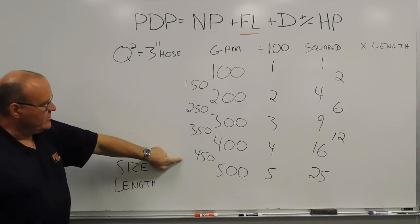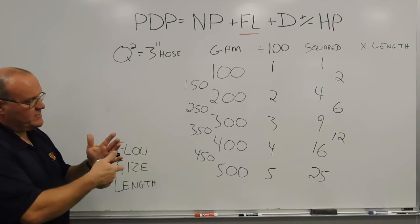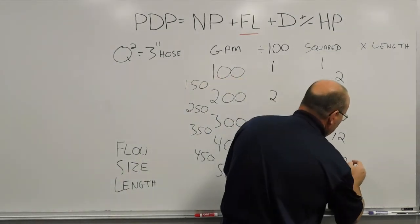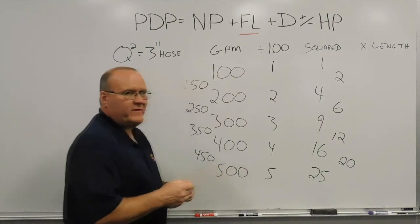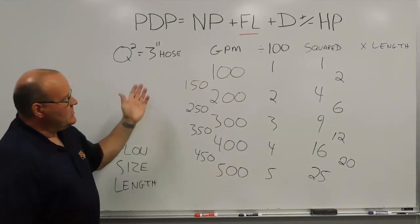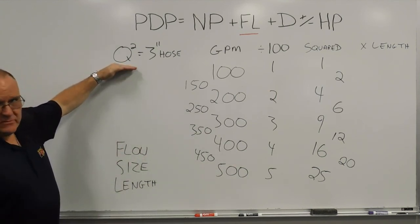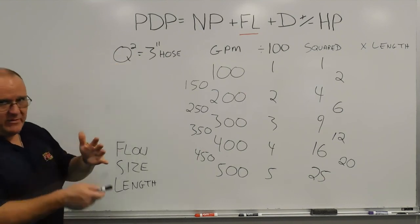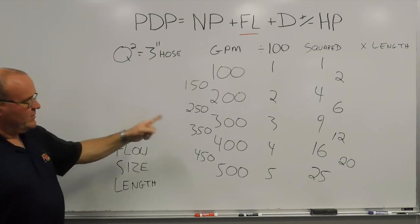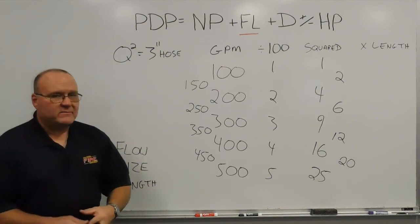And finally, 450 gallons a minute: 100, 200, 300, 400, 500 — 4 times 5 gives 20. So 450 gallons a minute gives 20 pounds of friction loss for every 100 feet of 3-inch hose. That's a quick, down-and-dirty look at the Q-squared method for 3-inch hose, which is our baseline for using the hand method. We accounted for the flow, the size, and the length — everything discussed here is per 100 feet. That's today's training minute. Thank you.